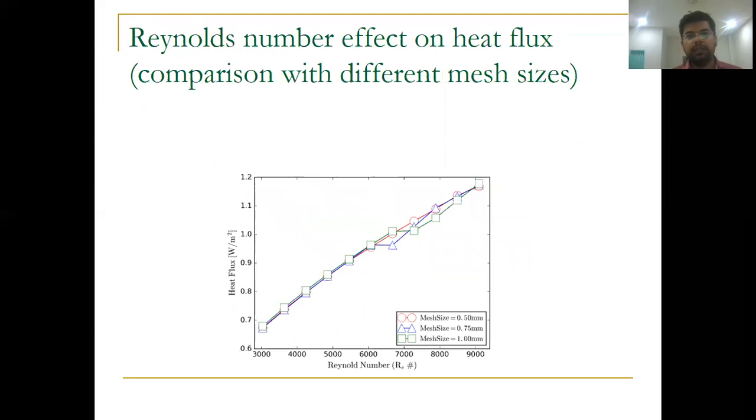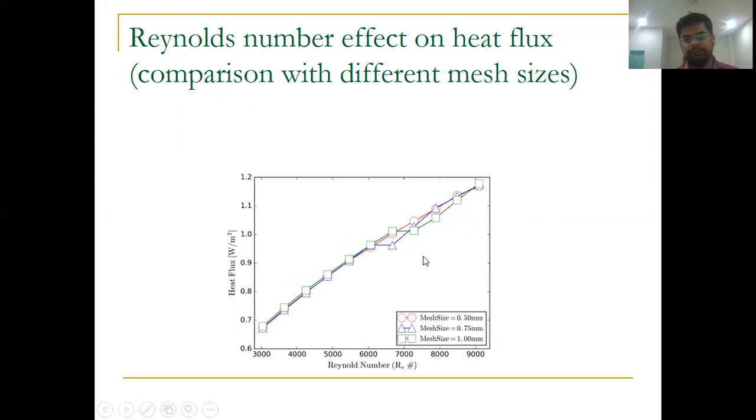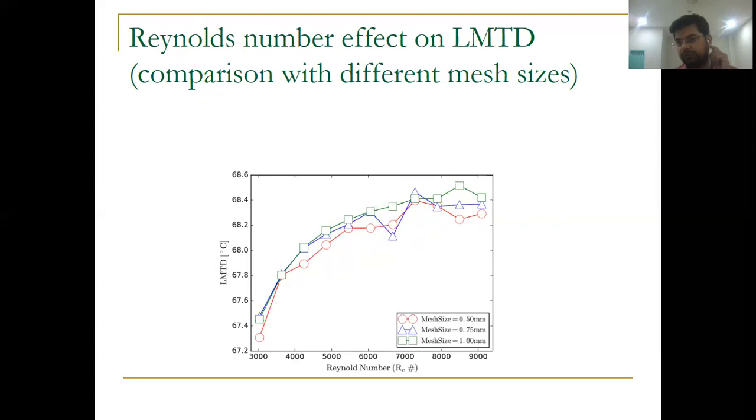Similarly, the effect of heat flux with respect to the Reynolds numbers with different mesh sizes. This is very unusual behavior on the graph between the mass flow rate and the outlet temperature difference. This is because of the meshing. In the previous slide, we also see there is still some glitch over there, it is not smooth. This is basically because of the mesh size for the problem, and we are working to solve this issue.